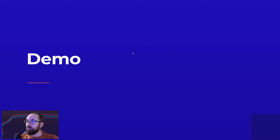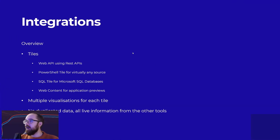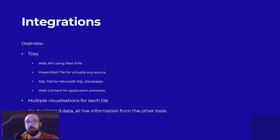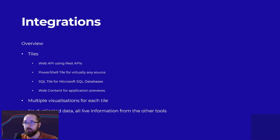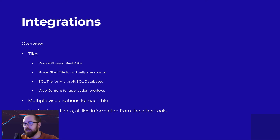Now on to integrations. At a very high level, integrations allow you to pull data from somewhere other than SCOM. In particular, we provide a Web API tile that can communicate with REST APIs that return a JSON formatted response. We provide authentication options — basic, simple, and OAuth — and there are a few options within those as well. It's a really great way to work with tools where you probably don't collect the data in SCOM. Common examples include ITSM tools, other monitoring tools, and CMDB.